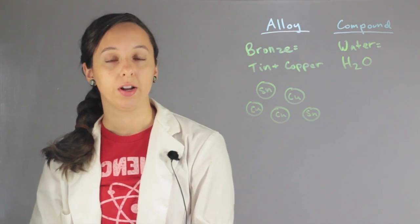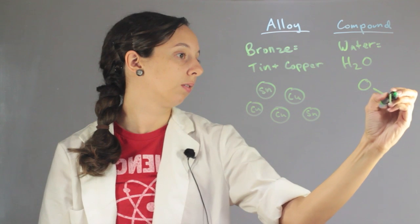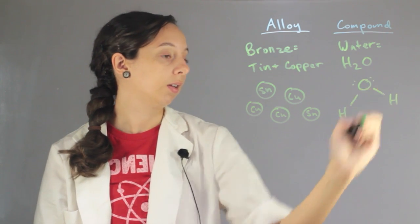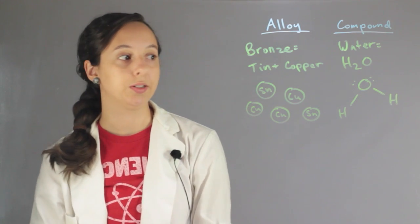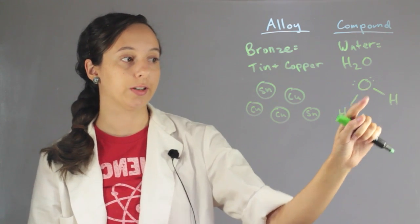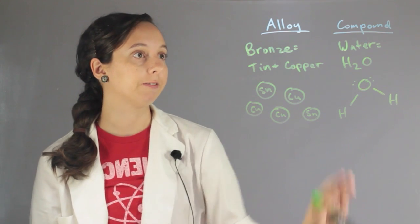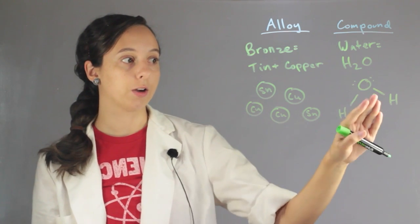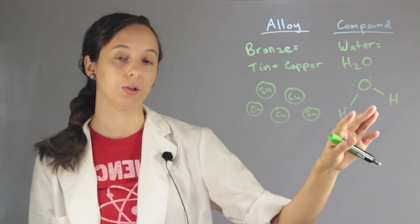So now if we draw out a water molecule, it has these two bonds here which are covalent bonds, which means that the oxygen atom shares its electrons with the hydrogen atom and vice versa. And so this is completely different than tin and copper who are just hanging out versus water which is bonded officially, and you have to put a lot of energy in to have these two guys break up.